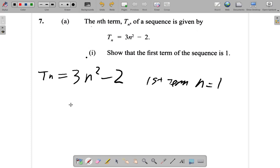So T₁: what is T₁? It's 3 times 1² (because n is 1), so instead of n², put 1², minus 2. So you have 3 times 1², which is 3 times 1, which is 3, minus 2. What is 3 minus 2? It is 1.